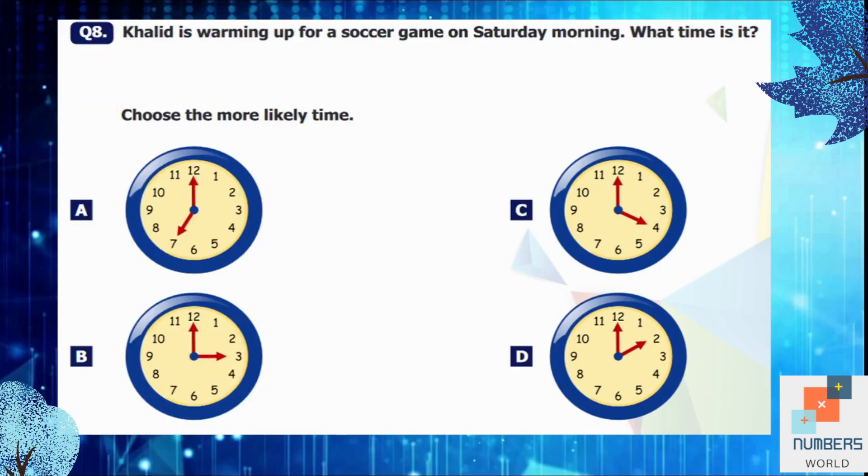Question number 8: Khalid is warming up for a soccer game on Saturday morning. What time is it? Choose the more likely time. So if we look at our option B, C, and D like 3 o'clock, 4 o'clock, or 2 o'clock, it's too early to get up. It will be darker outside. So option A is the best one because 7 o'clock is appropriate time to get up and get ready for the soccer game. So option A is our answer.